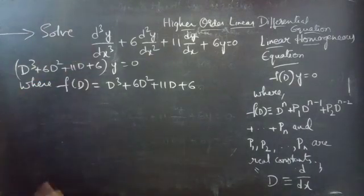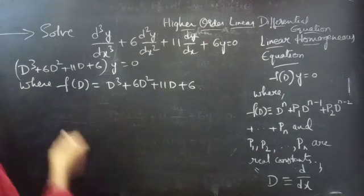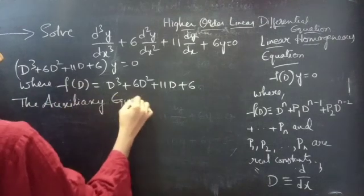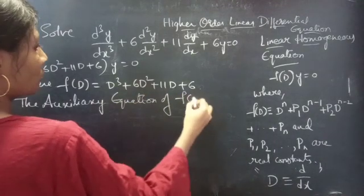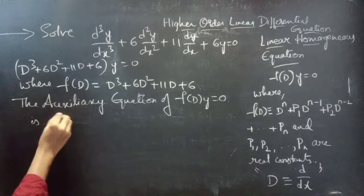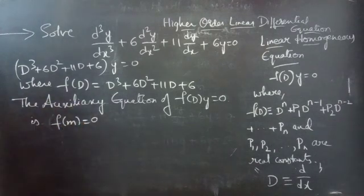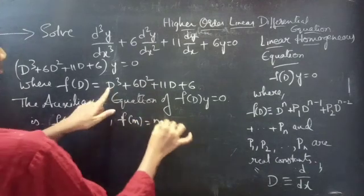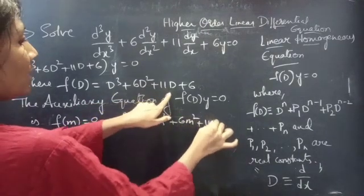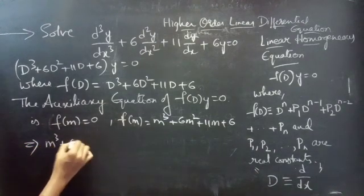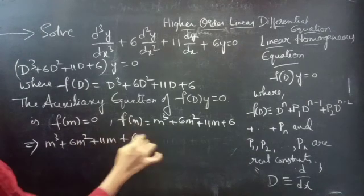Now we need to find the general solution using the auxiliary equation. The auxiliary equation of f(D)·y = 0 is f(m) = 0. We get f(m) by simply replacing D with m, giving f(m) = m³ + 6m² + 11m + 6 = 0.